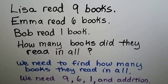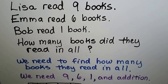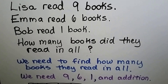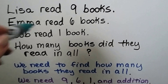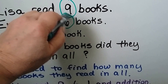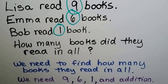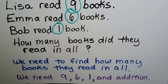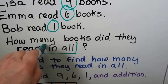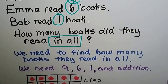What information do we need to use to find it? We need the nine, the six, and the one, and addition. And we need to use addition. It says 'in all' — that's a clue that it's going to be addition.